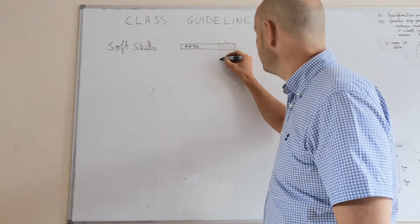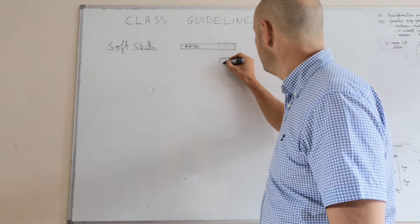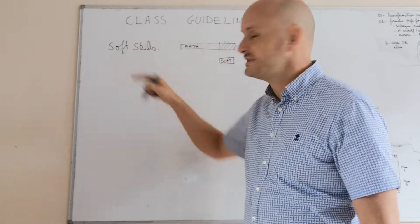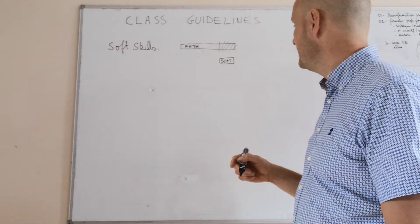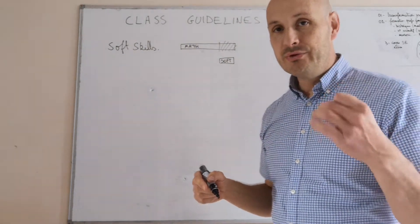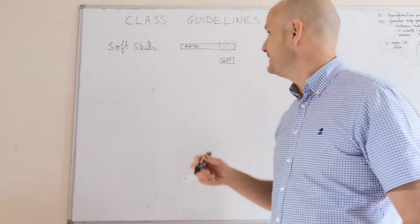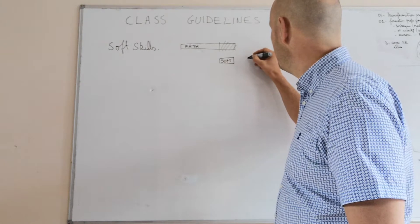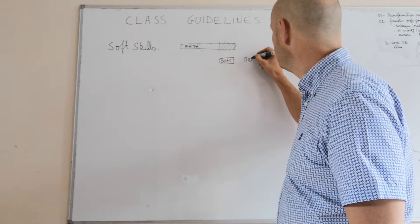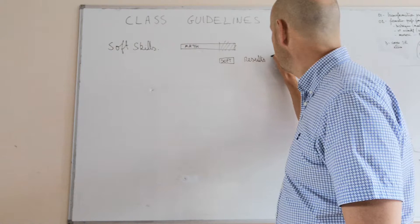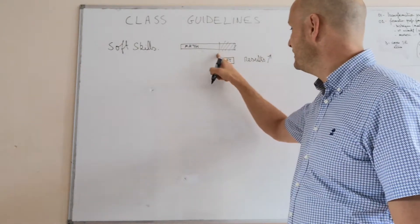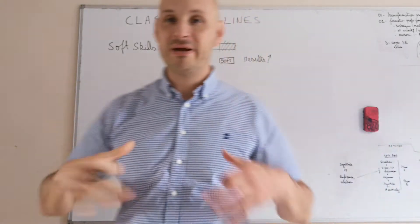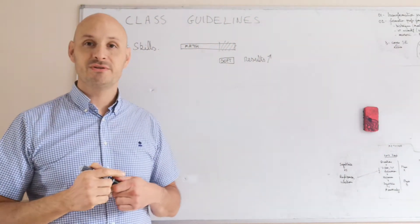And instead of doing mathematics, you do soft skills, explicit soft skills activities and learning. I would not be surprised, I would even bet that by doing so, you have greater academic results in mathematics. So doing less mathematics would lead to better mathematics results in the green books of the students.